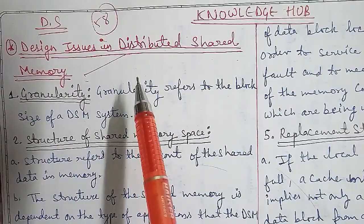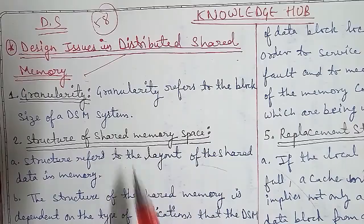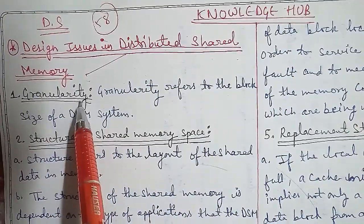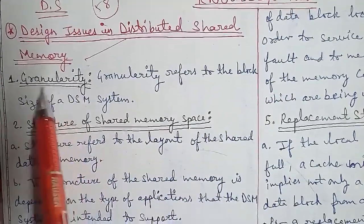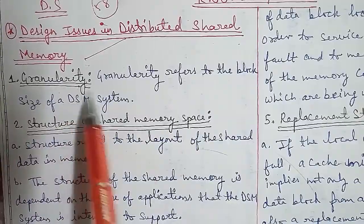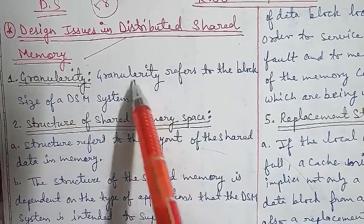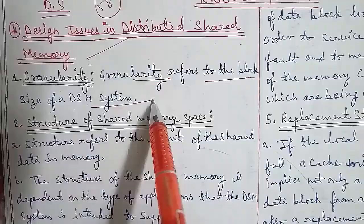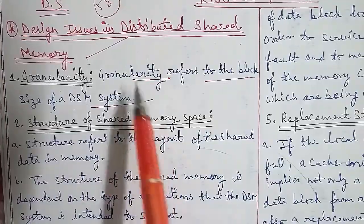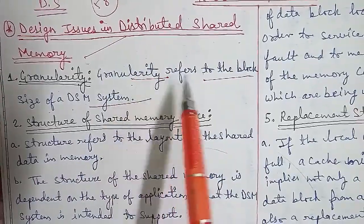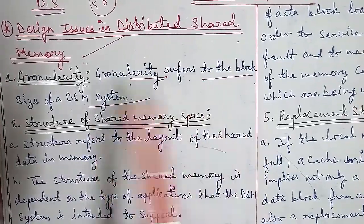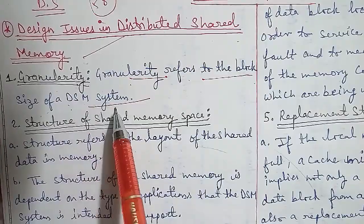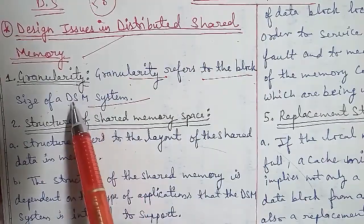First, you have to go through granularity. Granularity refers to the block size of DSM — that is, the block size in a distributed shared memory system.